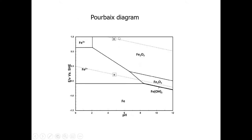By the way, the dashed line on the diagram represents oxygen evolution — 'O' for oxygen and 'H' for hydrogen. I won't go into that detail here, but note that the Pourbaix diagram does mark these as dotted lines.